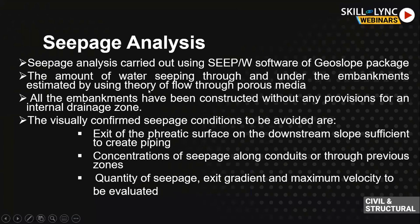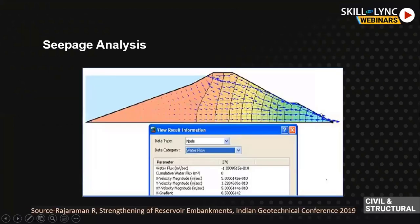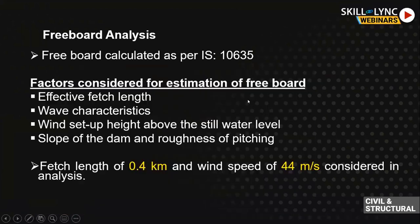Using Seep/W software, we checked for any piping or exit gradient issues. We checked the quantity of seepage and maximum velocity to find any problem. Another important factor: approximately 40% of slopes in earthen dams fail due to overtopping. The main factor here is freeboard — the distance between the top of the embankment surface and the top water level.